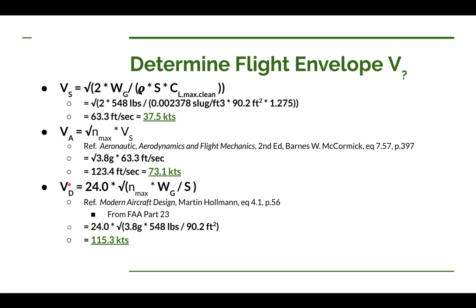V sub D, the dive speed, you can also use recommendations. This time I got mine from a different book, which is from Holloman, Modern Aircraft Design, equation 4.3 on page 56. This is derived from FAA Part 23. Take your maximum load limit multiplied by your maximum weight divided by the surface area of your wing. Take the square root of all that, multiply it by 24, and that gives you your knots. When I calculated all of that it gave me a speed of 115 knots for maximum dive speed.